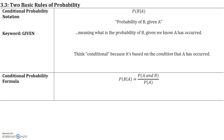In this section we will talk about two basic rules of probability. Let's start with conditional probability. The notation for conditional probability is probability of B given A — this line means 'given' — meaning what is the probability of event B occurring knowing that event A has occurred?